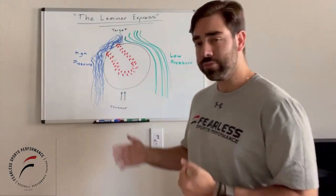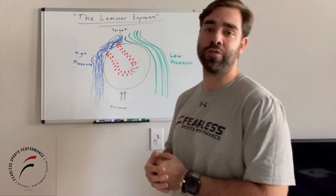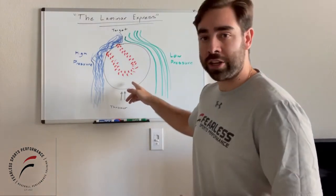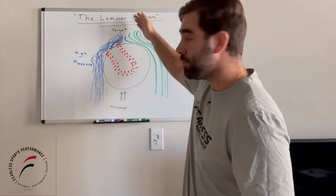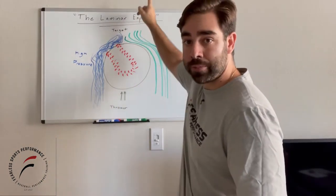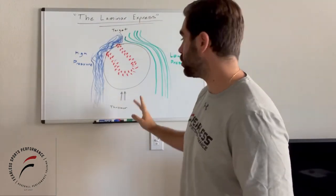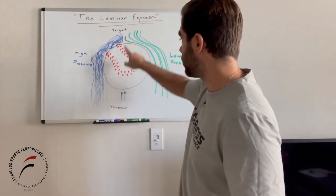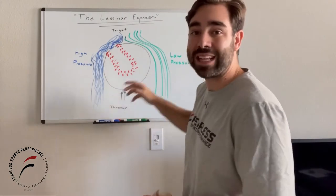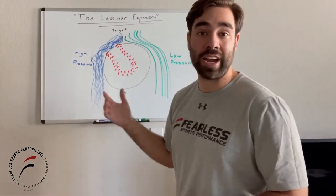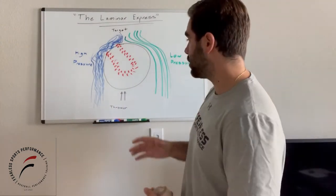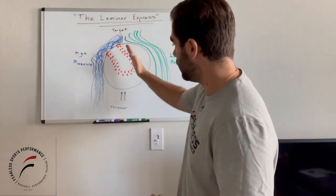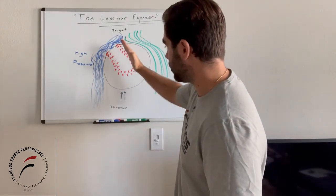I drew this visual for you guys here. This is the baseball right here in the middle. The target is up, the thrower is down, so the ball is moving this way. And these colored things you see here — that's the air, the airflow that we're going to see. What I want you to notice is that the ball is tilted this way.